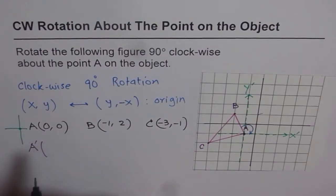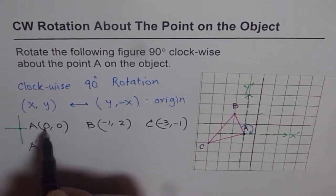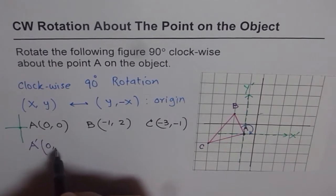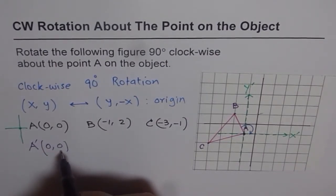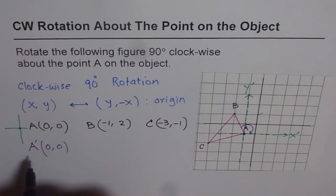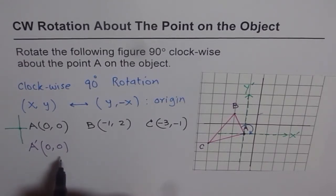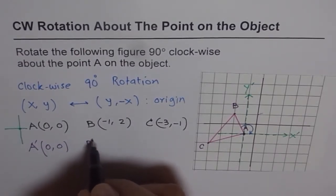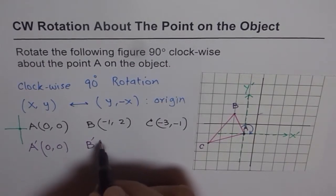A' remains at (0, 0) as expected — it hasn't changed. For B', we take the image point: swapping the x and y values of B = (−1, +2), we get (2, −1).